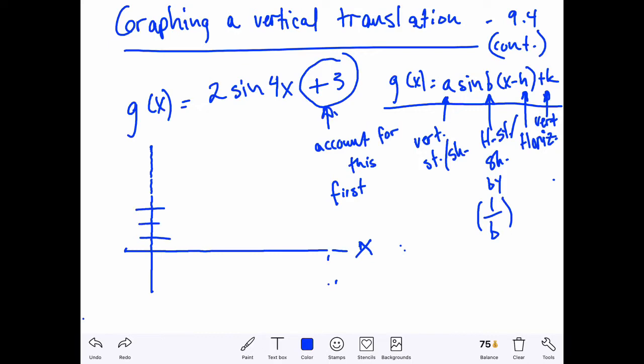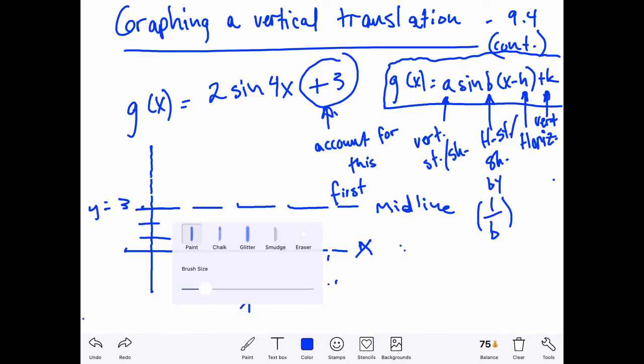So I'm going to go ahead and dot that in, it's going to be called a midline, and that's at y equal to three. Anytime we see that we've got a vertical translation like we do in this case of the up three, we want to account for that information first.